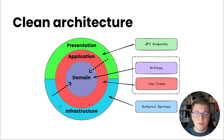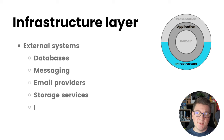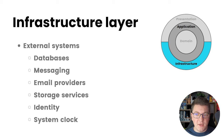On the outer layers of the architecture we have the presentation layer and the infrastructure layer, which I'm going to focus on in this video. The infrastructure layer is responsible for external services in the clean architecture. It resides above the application and domain layers, on the same level as the presentation layer. It is unique because it is responsible for implementing the abstractions defined in the lower layers that pertain to working with external services — meaning databases, messaging, email providers, storage services, identity providers, and even trivial things like the current system time.